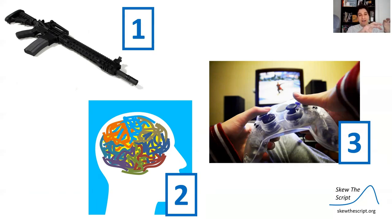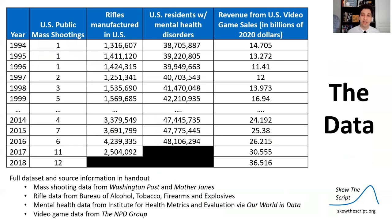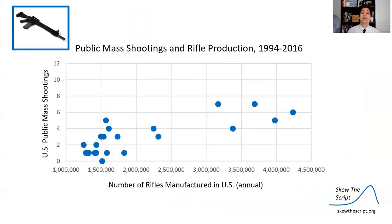Let's talk about a dataset for these three potential causes. We have assault rifles, mental health, and video games. We collected data on — for each year — the number of public mass shootings, the number of rifles manufactured in the United States during that year, the number of U.S. residents with classified mental health disorders, and the revenue from U.S. video game sales.